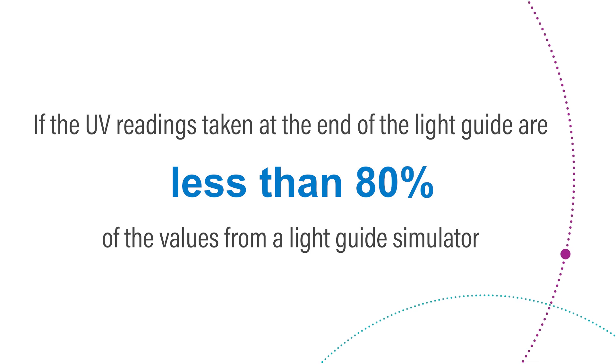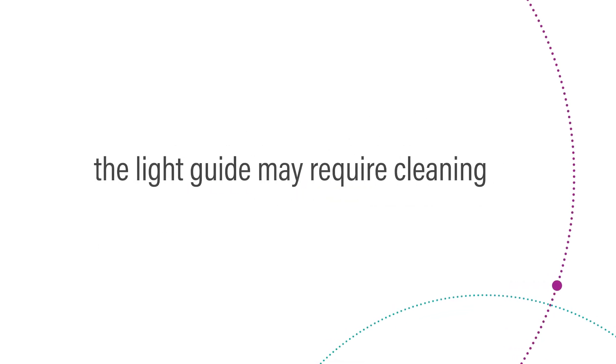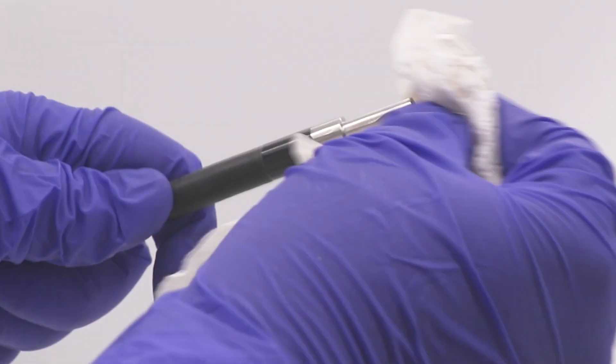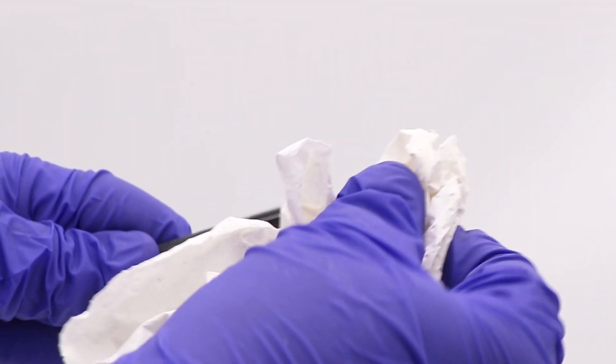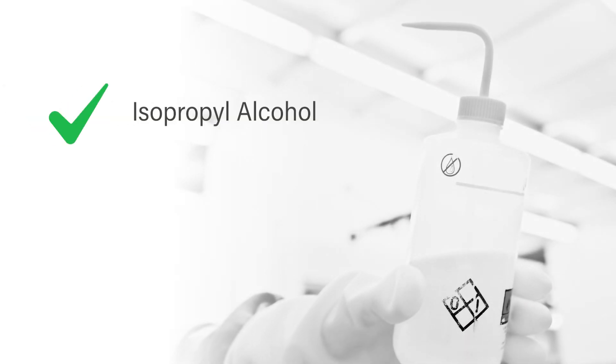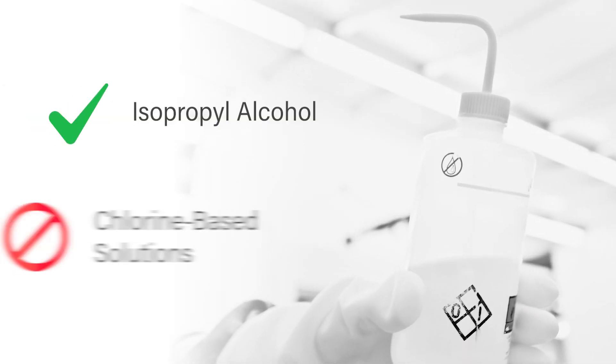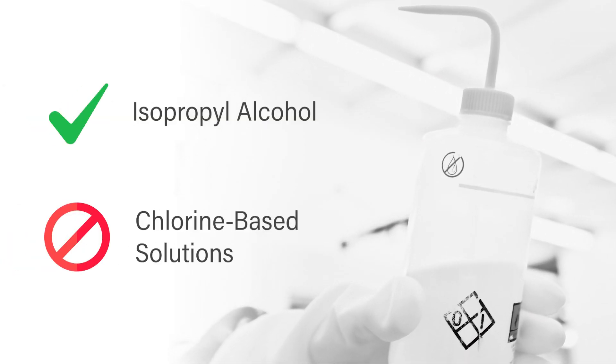If the light guide needs cleaning, use tissue and solvent to remove contamination. Isopropyl alcohol is the recommended cleaning agent. Chlorine-based solutions can be exceptionally damaging to liquid light guides and should not be used.